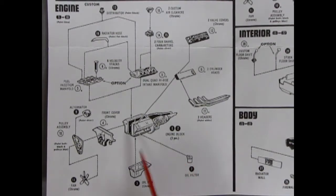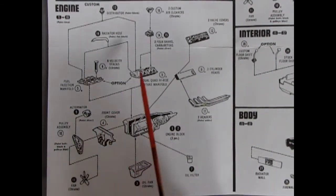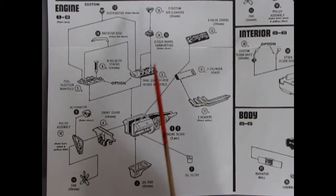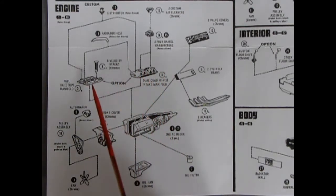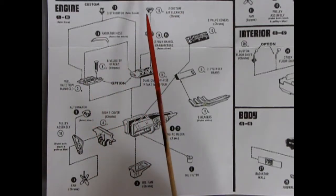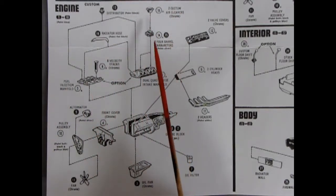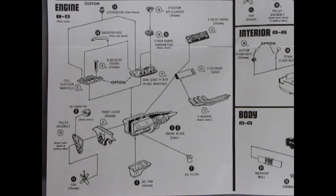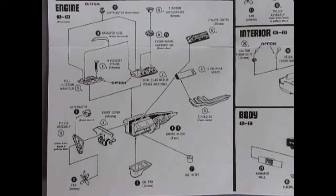There's our oil pan. Our oil filter glues up in the front. We've got a fan going on to the fan belts and alternator. And then you can put on these fuel injector manifold as well. And then there's a radiator hose. It'll go to the radiator. You also get these cool air cleaners on here for your carburetors.